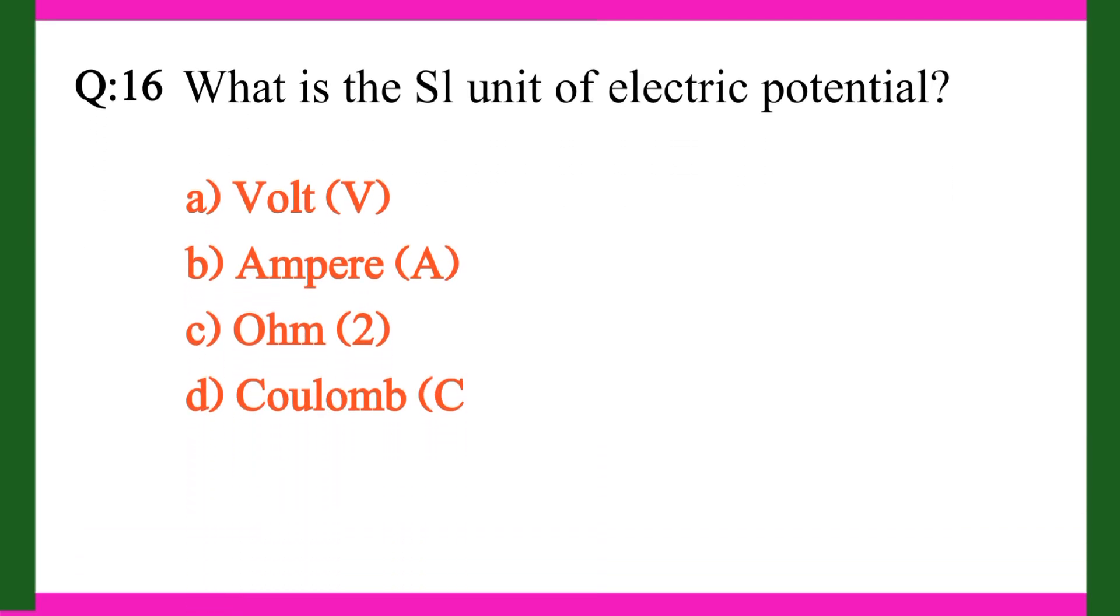Question 16. What is the SI unit of electric potential? A. Volt (V). B. Ampere (A). C. Ohm (Ω). D. Coulomb (C). Right answer is A. Volt (V).